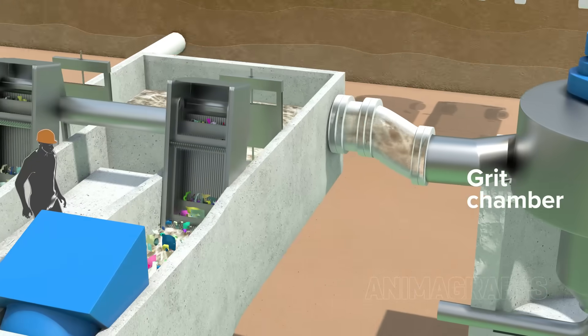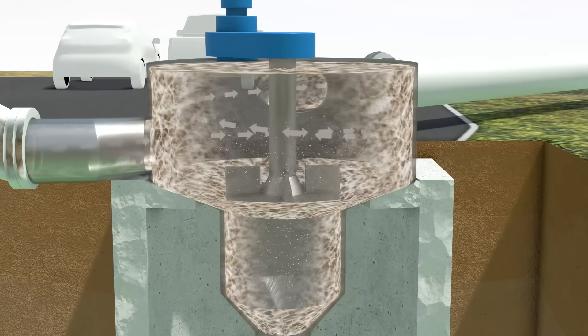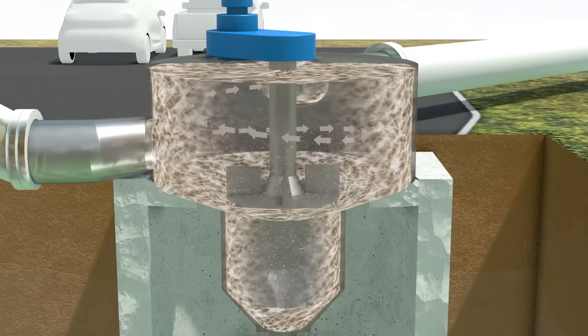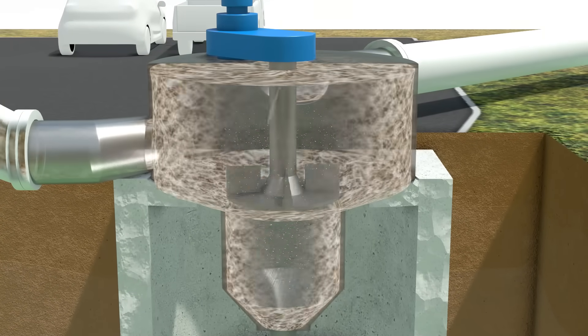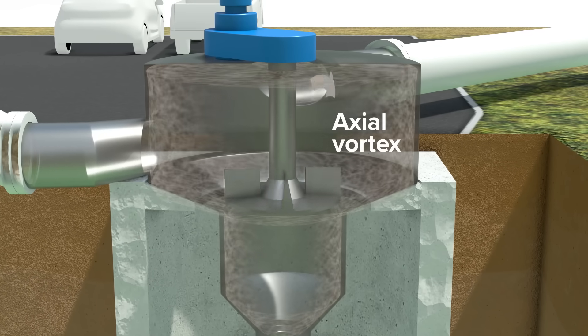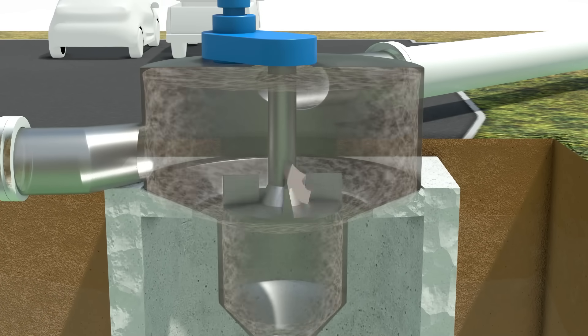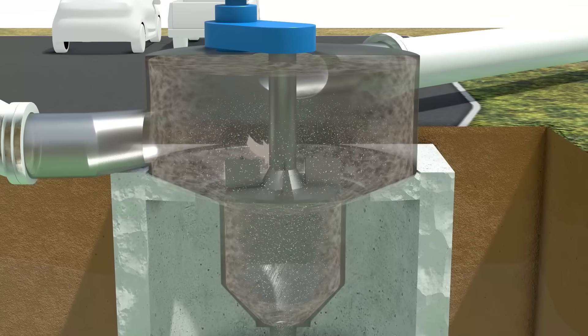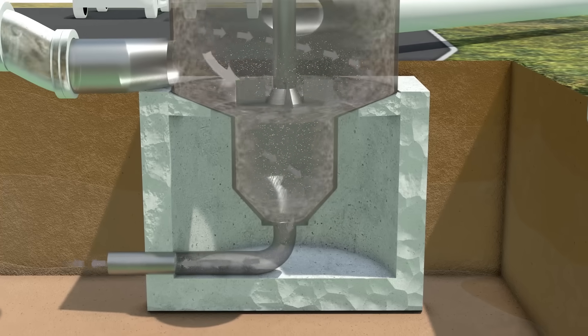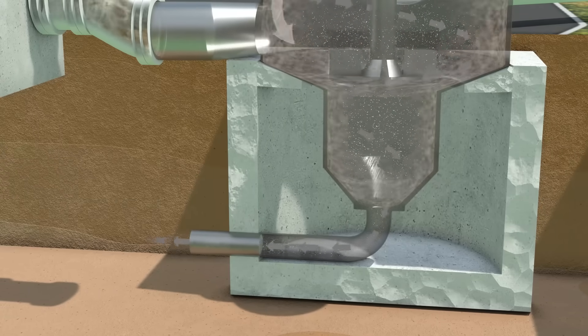The water then travels to the grit chamber to remove heavier, inorganic, gritty particles like sand, silt, clay, coffee grounds, eggshells, and so forth, while allowing lighter organic material to pass through. A spinning plate with fins, called an impeller, creates an axial vortex, which is a sort of vertical spiral force along its spin axis, at a specific speed so as to catch particles in a defined weight range. These heavier grit particles are forced down chamber walls and out at the bottom. The grit is collected to undergo its own separate dewatering and washing process.